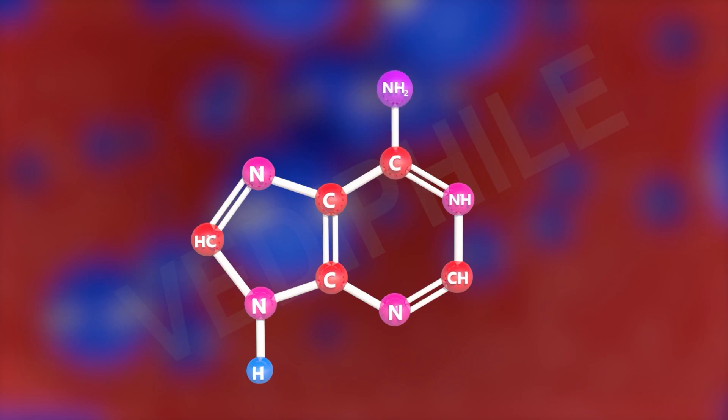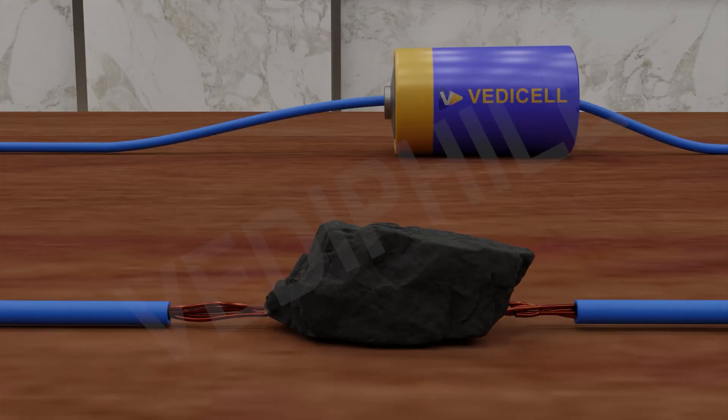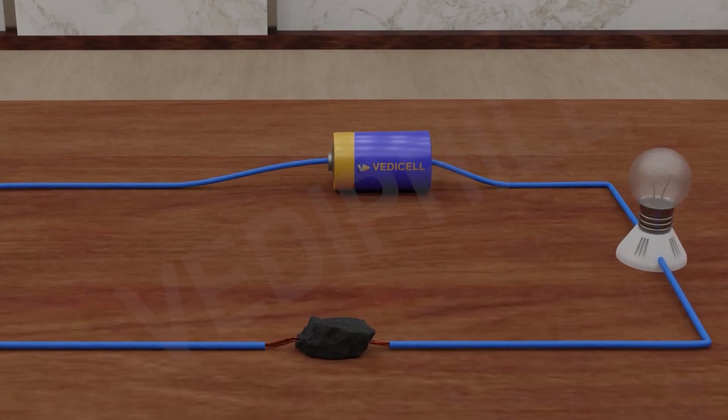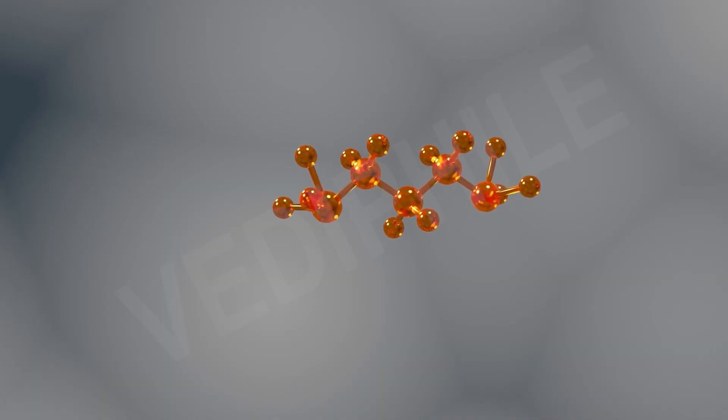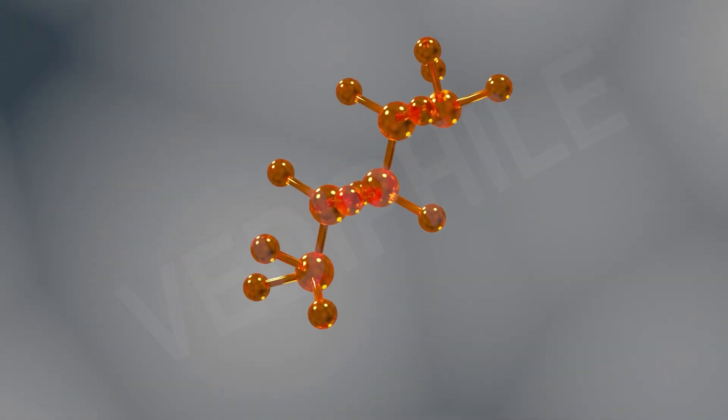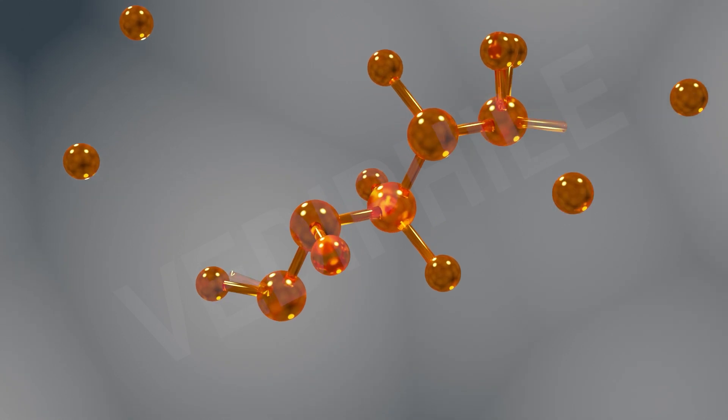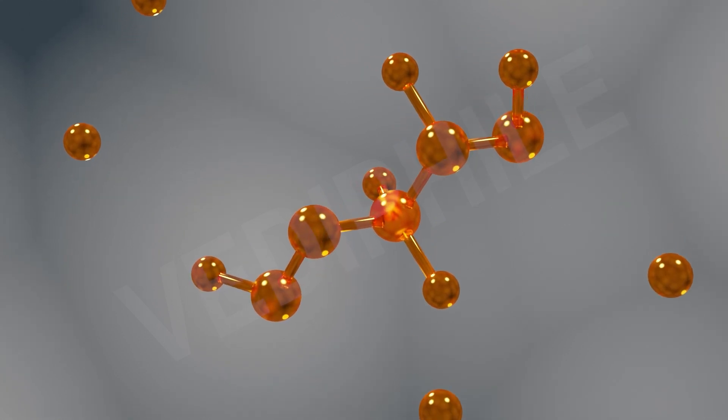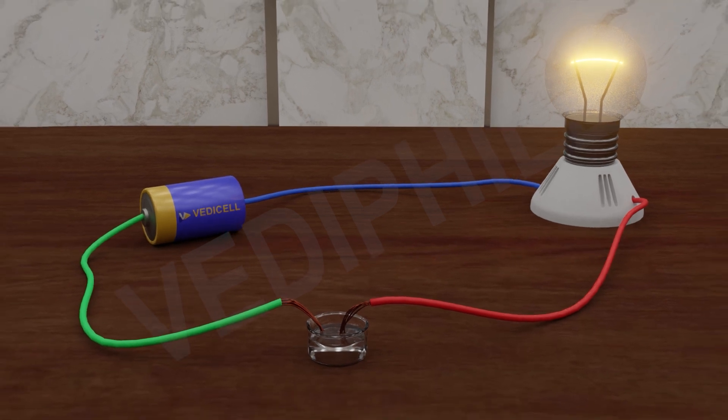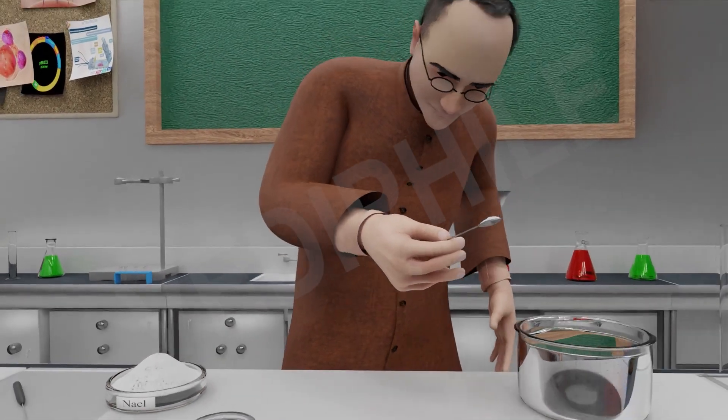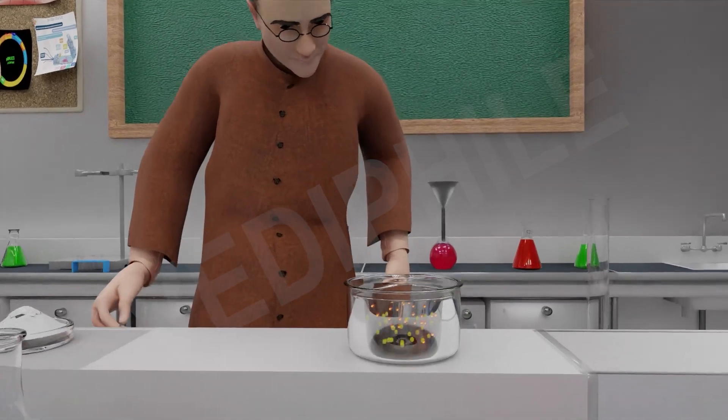Most carbon compounds, especially organic compounds, are poor conductors of electricity. But why are they poor conductors? This is because the bonding in these compounds does not result in the formation of ions.